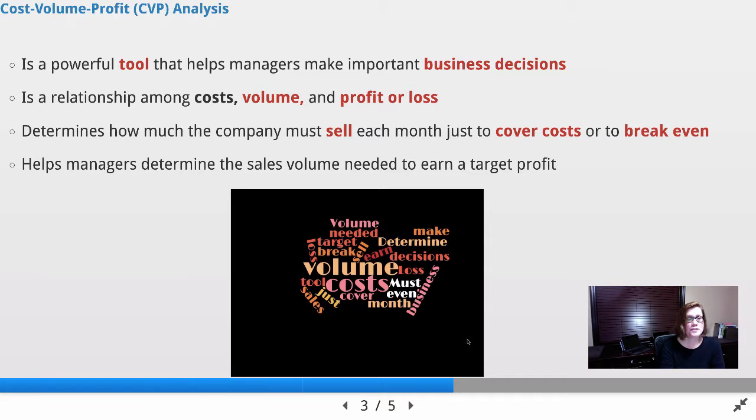In cost volume profit analysis, as managerial accountants, we find this tool to be quite powerful and robust in helping us make important business decisions. CVP tells us the relationship between the costs of making the product, the amount or volume of sales that we have, and the profit or loss associated with those sales. CVP analysis allows the company to see how much they have to sell each month to cover costs or to break even.